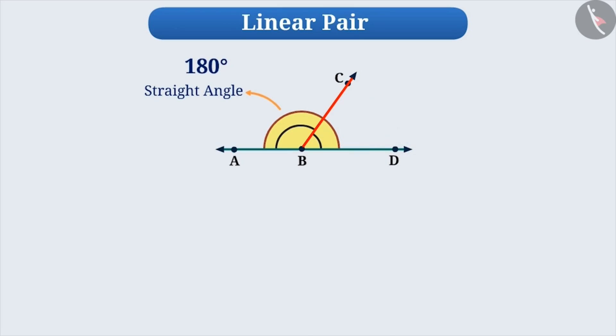Here, BC is the common side of both the angles and the sides BA and BD are the non-common sides of both the angles. You can see that side BA and side BD are moving in opposite direction.